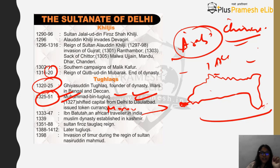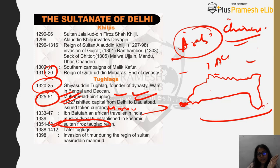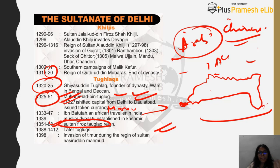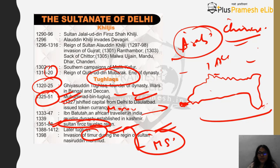After Mohammed bin Tughlaq's reign came Firuz Tughlaq, whose reign started around 1351. After him some weak rulers came but they did not do anything significant for examination purposes. You should also remember that during the Tughlaqs there was an invasion by Timur, and why Timur is important you will come to know when we study Mughal rule.